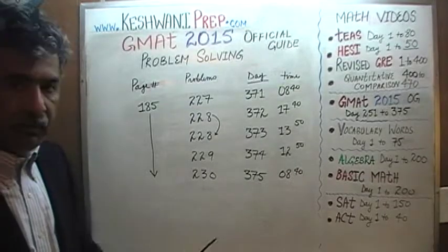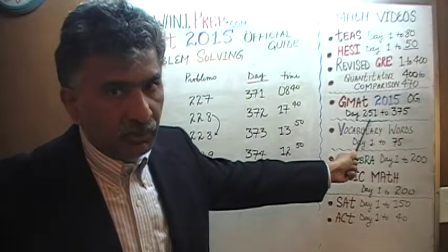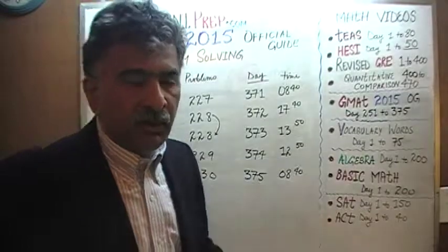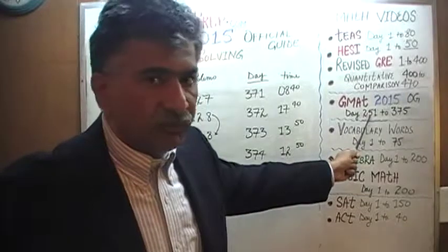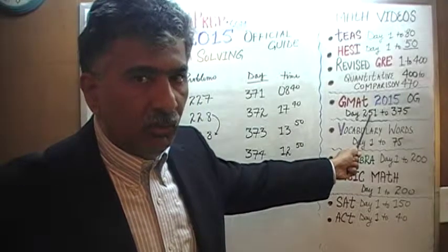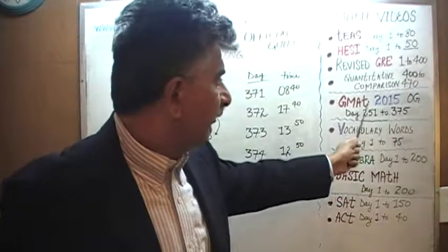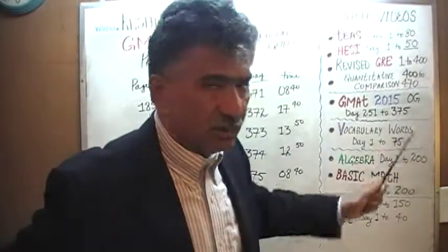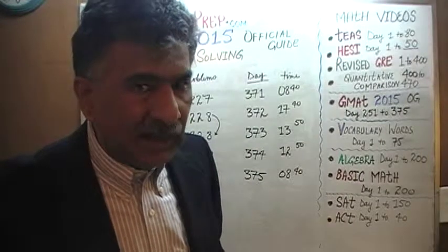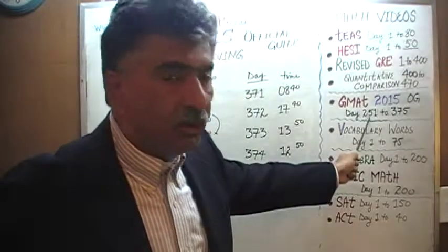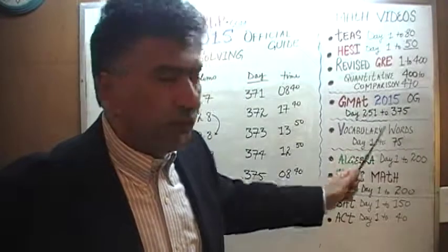Day number 375 is where the story ends. The story begins on day number 251. If you are interested in finding solutions to any of the problem solving questions or any of the data sufficiency questions, you will find the solutions to all the problems from day number 251 to 375 for GMAT 2015 Official Guide. The solutions to data sufficiency questions you will find on even numbers beginning with 252 — just type in GMAT-MAT-D252 and it will pop right up.